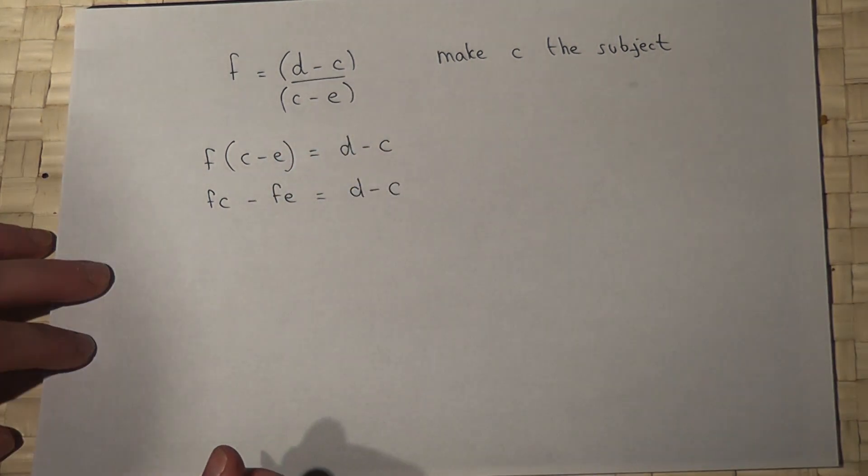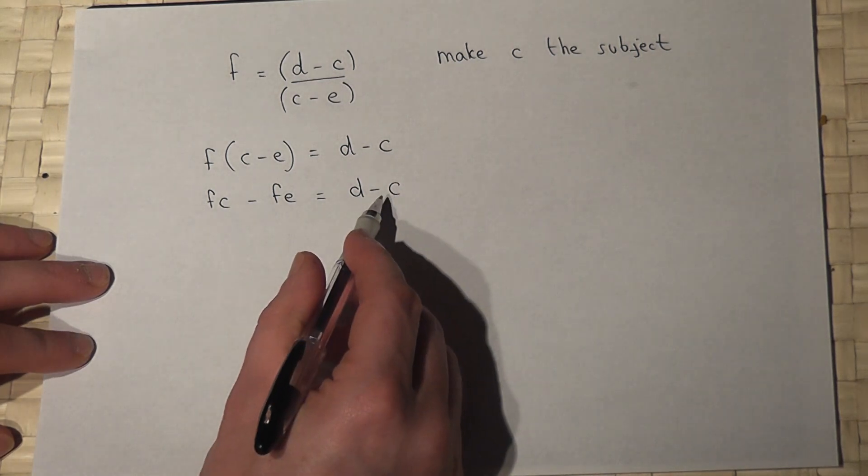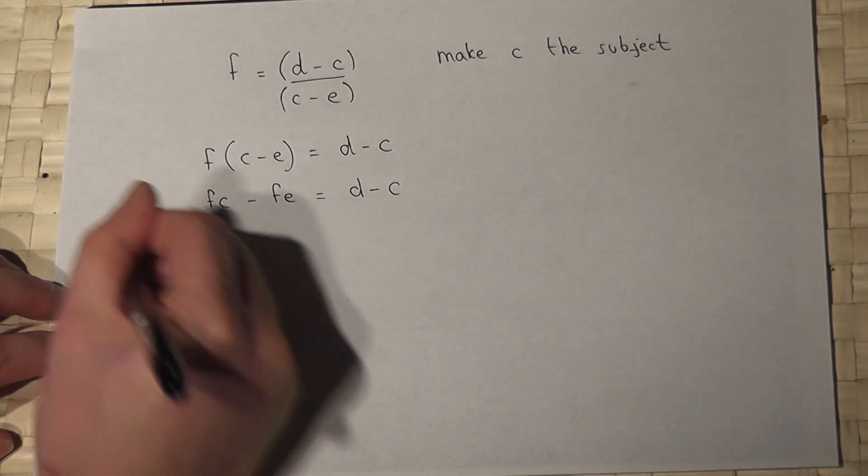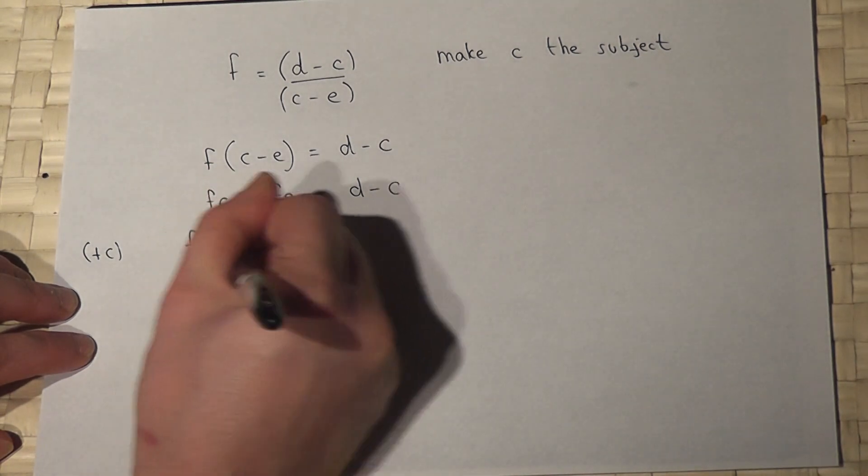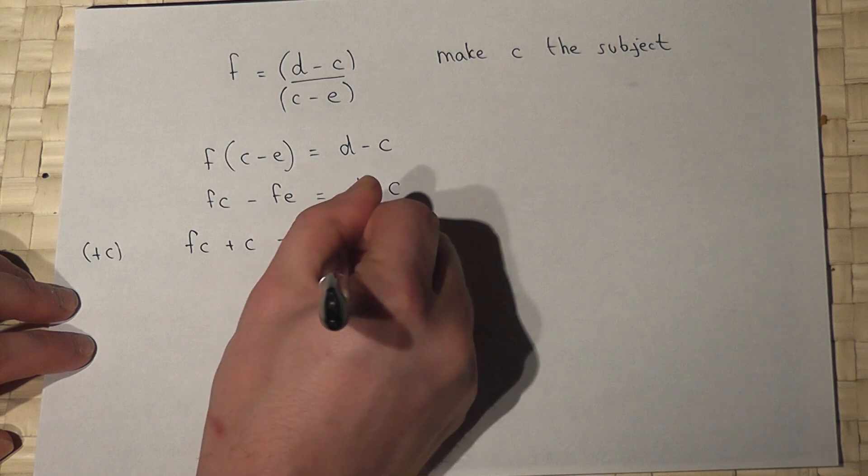Now I must try and get all the terms which involve a C onto the same side. So if I add C to both sides, that will cancel out, so FC plus C minus FE equals D.